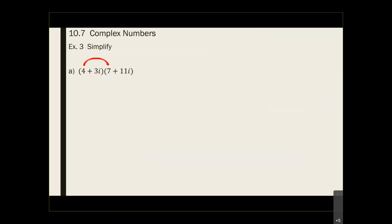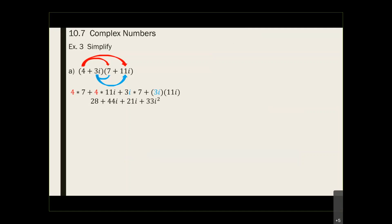To multiply, if you remember multiplying binomials, you distribute. We take the first item and distribute in, then take the second item and distribute in. So you take 4 times 7, 4 times 11i, 3i times 7, and 3i times 11i. The red ink corresponds to the red arrow, the blue ink to the blue arrow. So: 4 times 7 is 28, 4 times 11 is 44i, 3 times 7 is 21i, and 3 times 11 is 33, and i times i is i squared, giving 33i squared. Now I need to combine like terms, which gives me 65i.